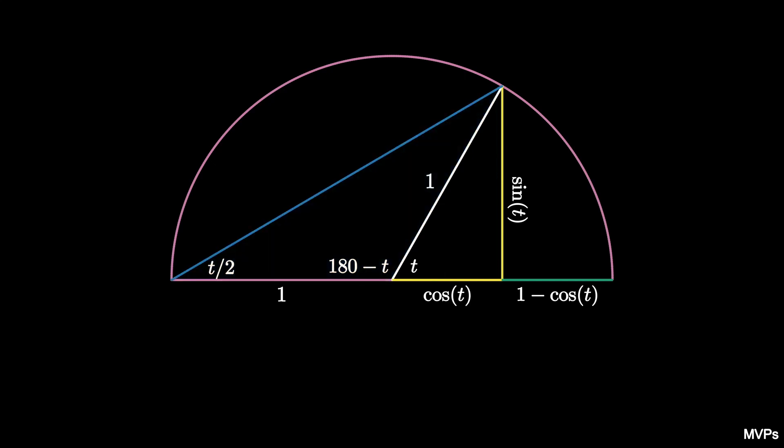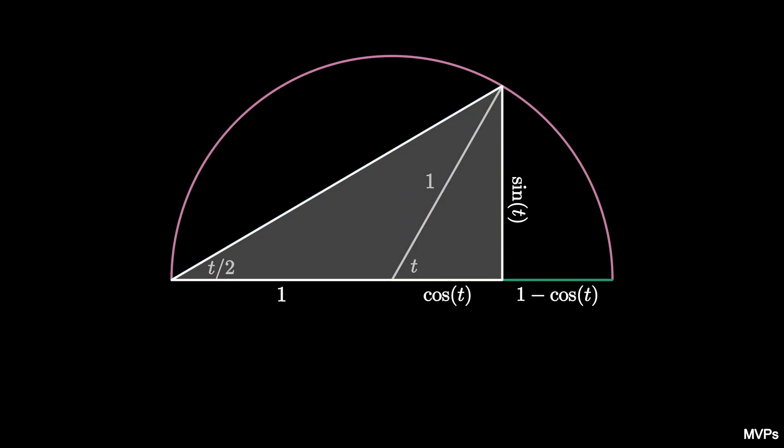But then, t over 2 is an angle inside of this highlighted right triangle. So the tangent of t over 2 is equal to the sine of t over 1 plus the cosine of t.